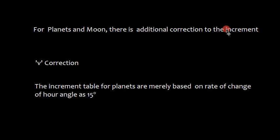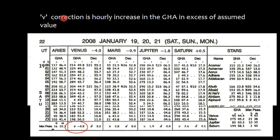Let's talk about planets and moon. There is additional correction to the increment and that additional correction is called V correction. The increment table for planets are merely based on rate of change of hour angle as 15 degrees. The V correction allows for the fact that planets change their angles at slightly variable rates. We can say the V correction is hourly increase in the GHA in excess of the assumed value.